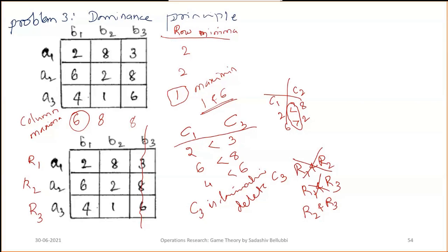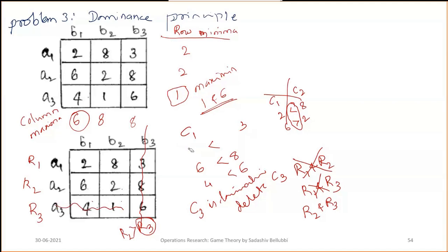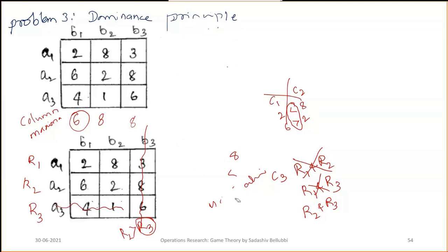Comparing R2 and R3: 6 is greater than 4 and 2 is greater than 1, so R2 is dominating R3. The lesser one is R3, so delete R3.